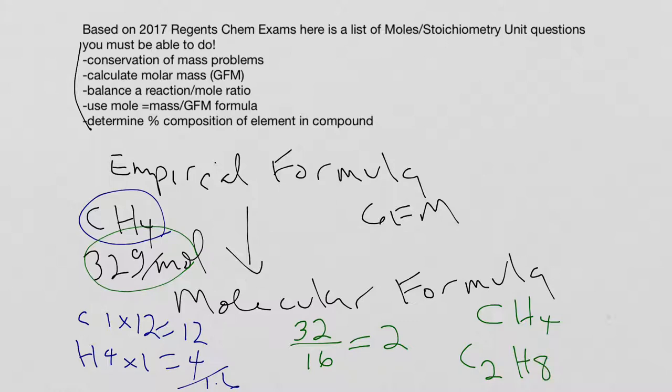So three steps: determining the empirical formula gram formula mass, dividing the actual gram formula mass by the empirical formula, and you end up with a molecular formula of C2H8. That's your answer.